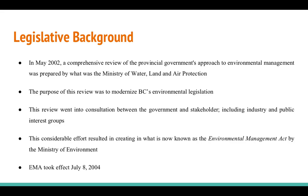In May 2002, a comprehensive review of the provincial government approach to environmental management was prepared by what was the Ministry of Water, Land and Air Protection. The purpose of this review was to modernize BC's environmental legislation. This review went into consultation between the government, stakeholders, including industry and public interest groups. This considerable effort resulted in creating what is now known as EMA, or the Environmental Management Act, by what is now known as the Ministry of Environment. EMA took effect on July 8, 2004.